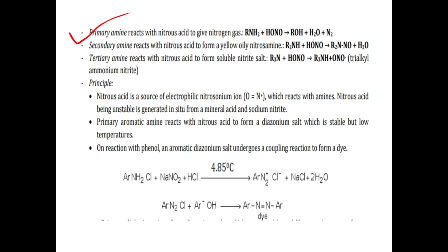The principle: primary amines react with nitrous acid to give nitrogen gas. Secondary amines react with nitrous acid to give a yellow oily nitrosamine. Tertiary amines react with nitrous acid to form a soluble nitrate salt. Nitrous acid is a source of the electrophilic nitrosonium ion, and being unstable, it is generated in situ from a mineral acid and sodium nitrite.